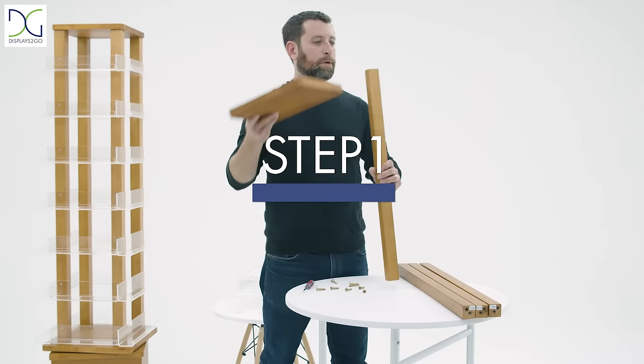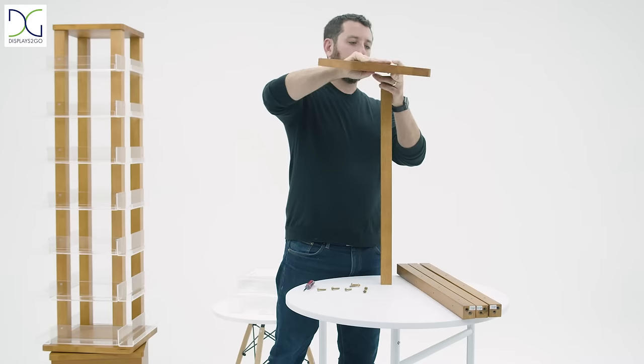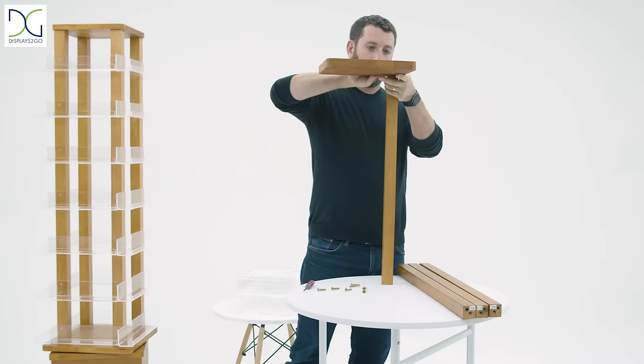Step 1. Place the top wooden panel on top of one wooden pole and align the holes with the pre-drilled holes at one corner of the panel.